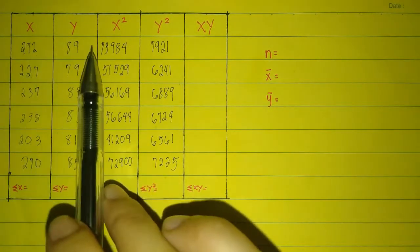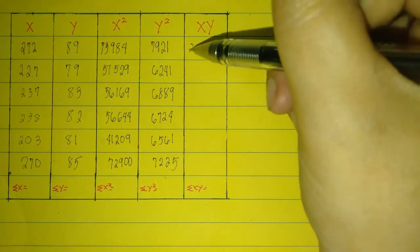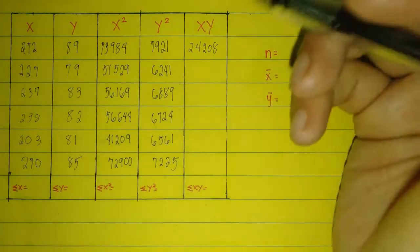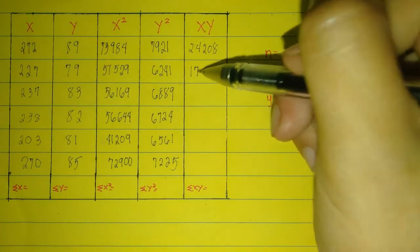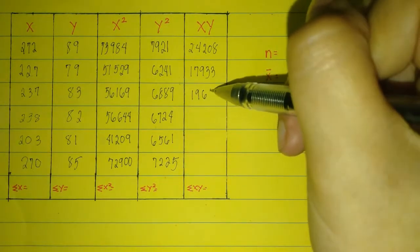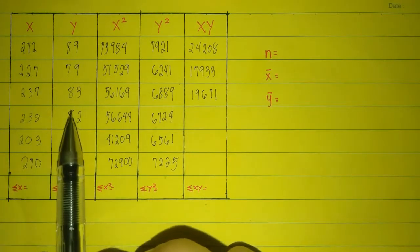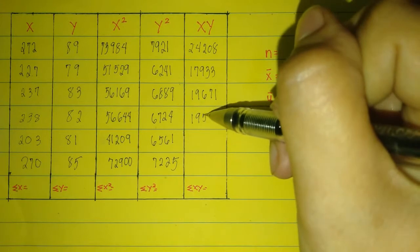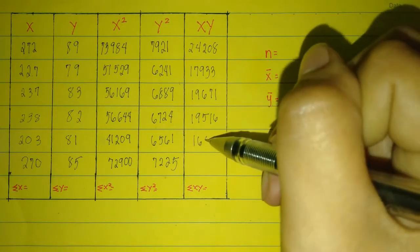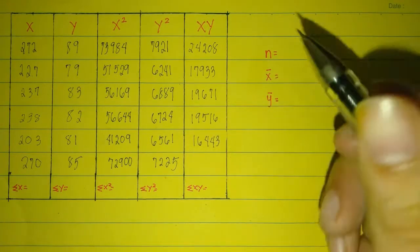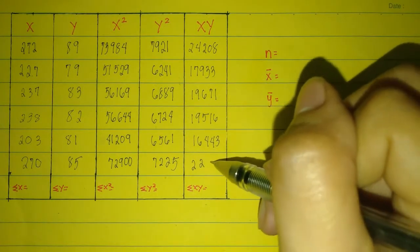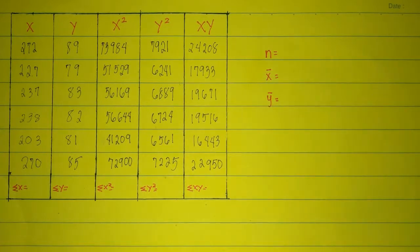To get xy, multiply x by y. The results are: 24,208; 17,933; 19,671; 19,516; 16,443; and 22,950.